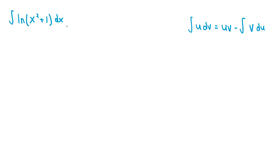Let's do the integral of ln(x² + 1). Similar to the integral of ln(x), we should start off by doing integration by parts. We let u equal ln(x² + 1), which is what we need to differentiate, and dv equal dx, which is what we need to integrate.